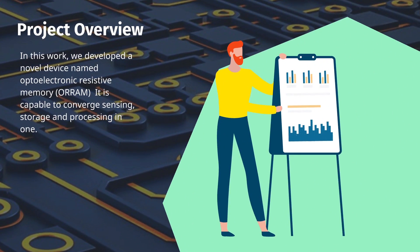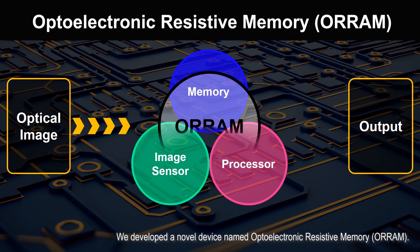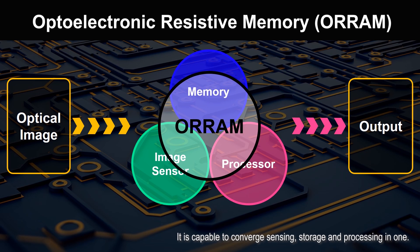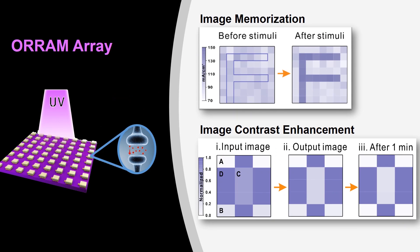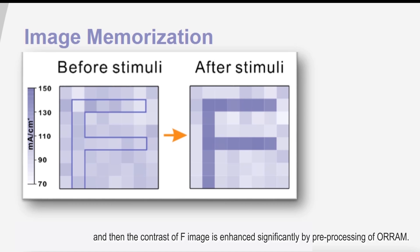Project Overview: In this work we developed a novel device named optoelectronic resistive memory, ORRAM. It is capable of converging sensing, storage, and processing in one. We fabricated ORRAM arrays. The image of letter F is memorized firstly, and then the contrast of F images is enhanced significantly by pre-processing of ORRAM.